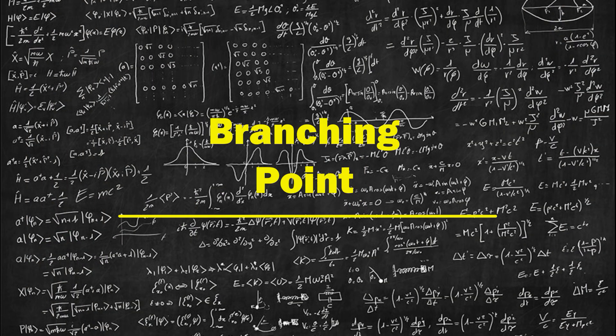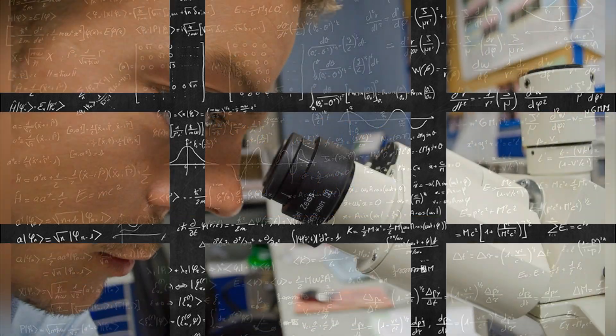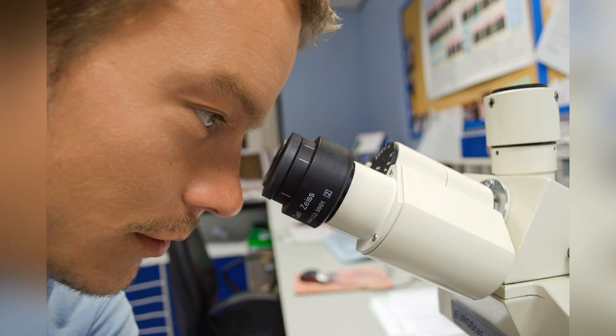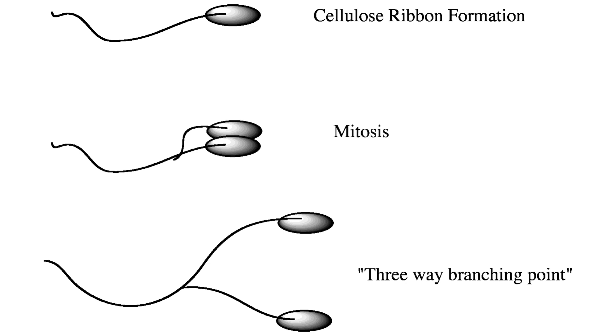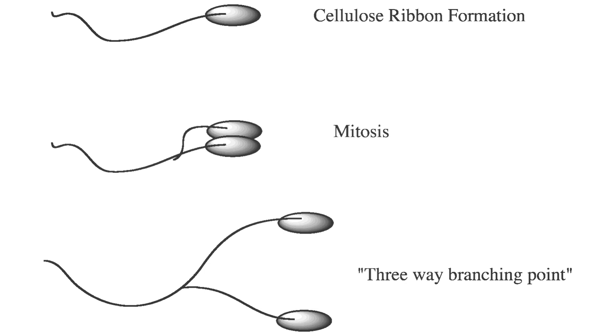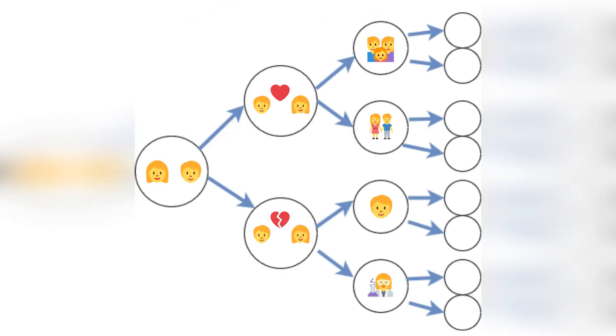Branching Point: According to the many-worlds theory, when observation occurs, the superposition state reaches a branching point. At this point, one of the possible states actualizes, and each one exists in a separate parallel universe.